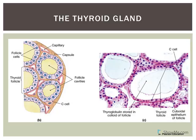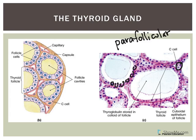Looking at the thyroid gland histologically, you'll notice many structures referred to as follicles or thyroid follicles. These are associated with the production of thyroid hormones. The cells that line the follicle are simple cuboidal cells referred to as follicular cells, and they produce T3 and T4. To the side, there is a cell referred to as a C cell, also called parafollicular cells because they're next to or nearby the follicular cells. They produce calcitonin, which is involved in calcium balance, but it's not important in adults.